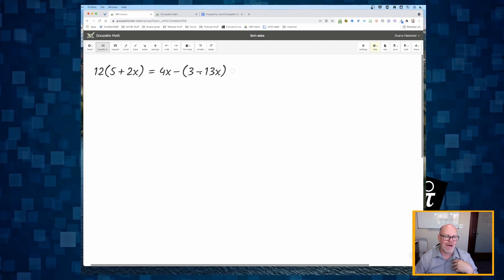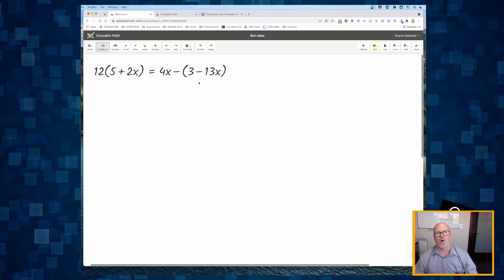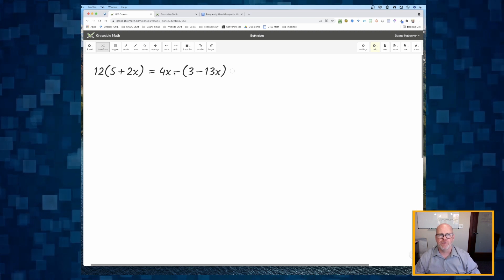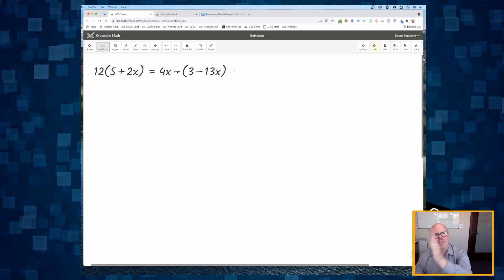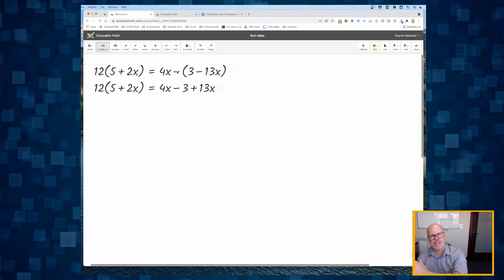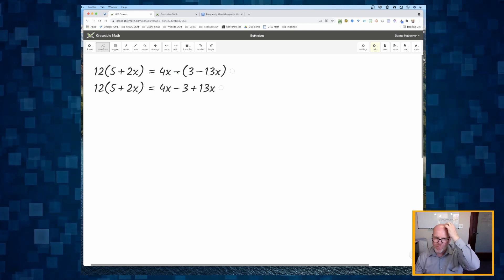It's going, no, you are not allowed to do that. But if I click on this minus sign right here, I am allowed to do that. It's going to distribute the negative across that parenthesis.